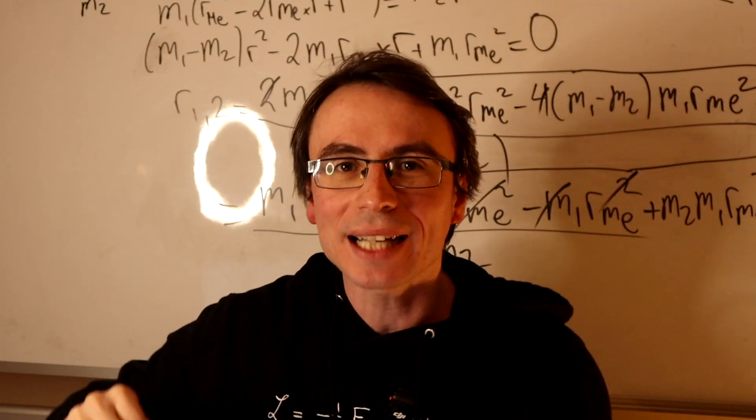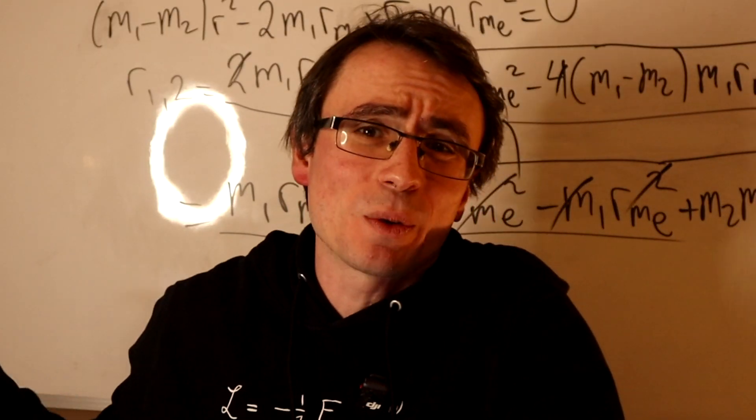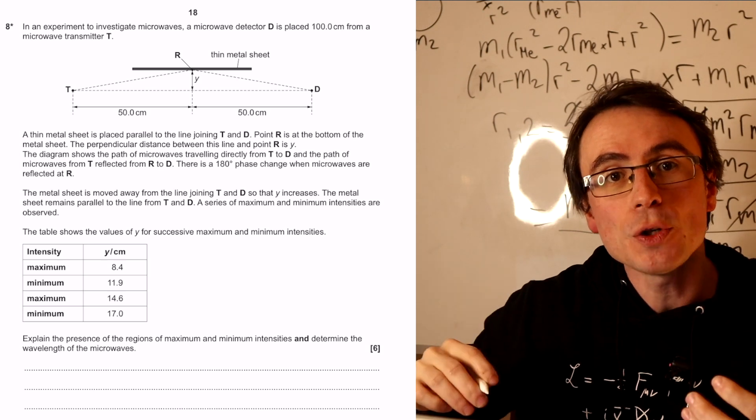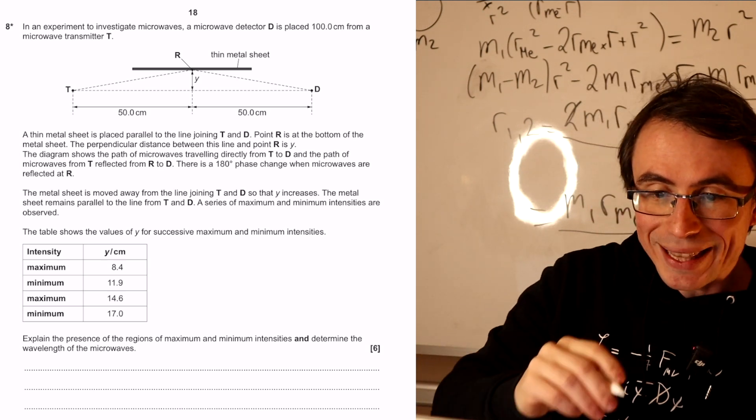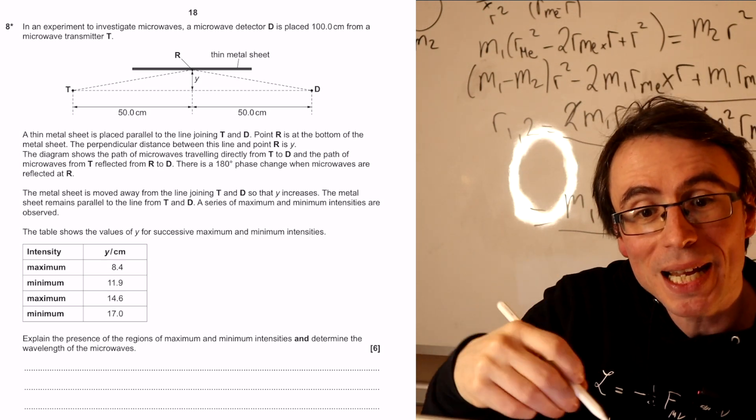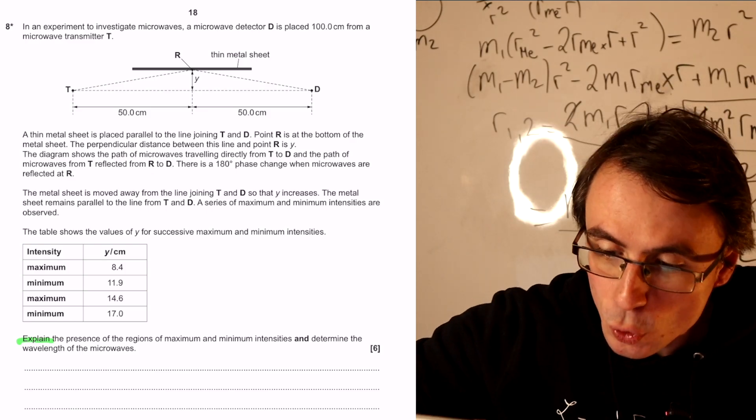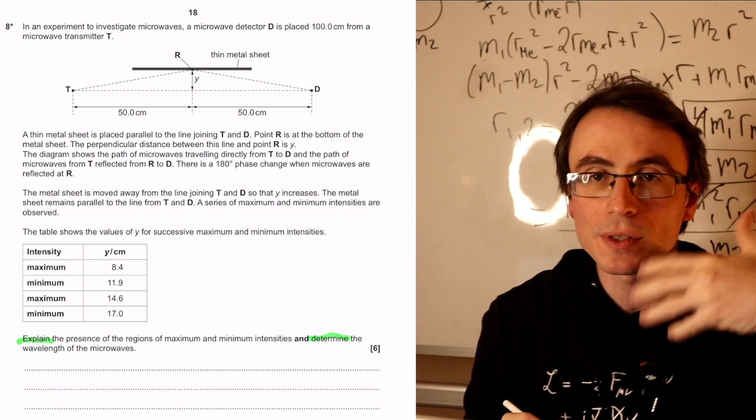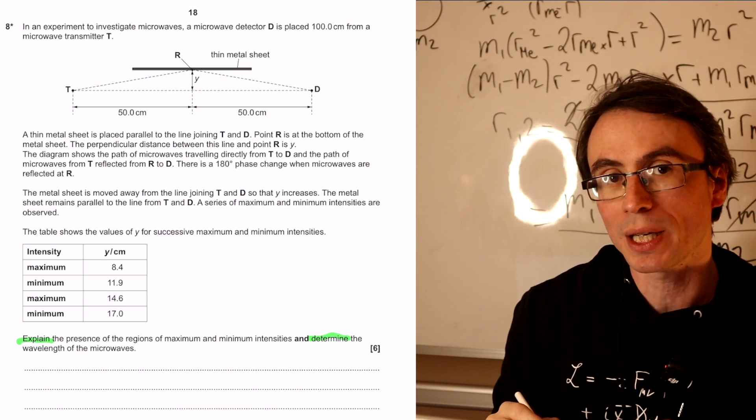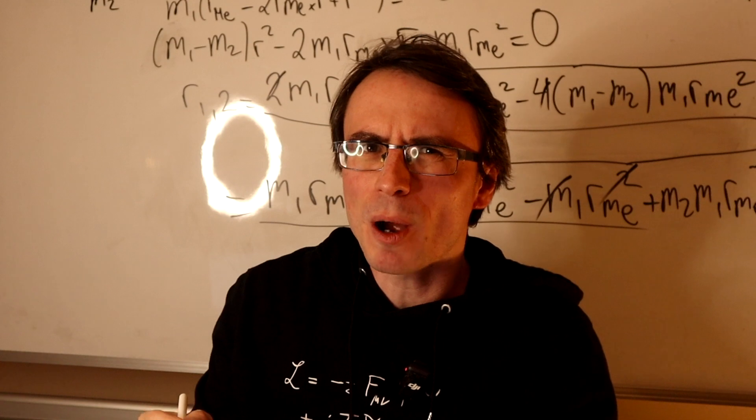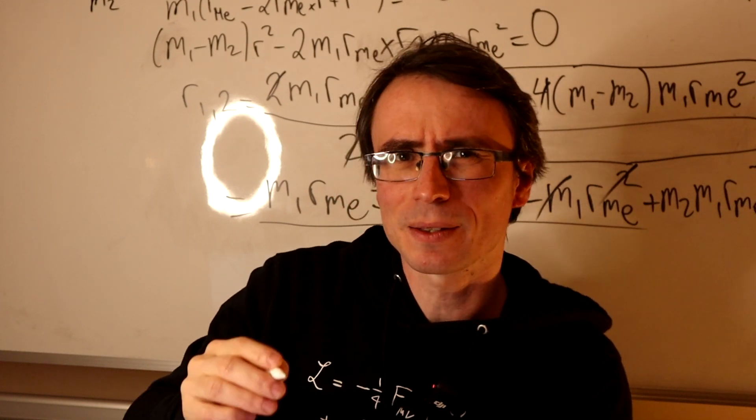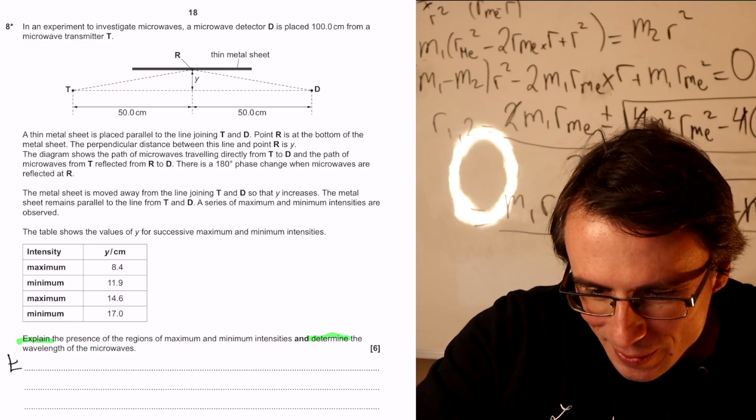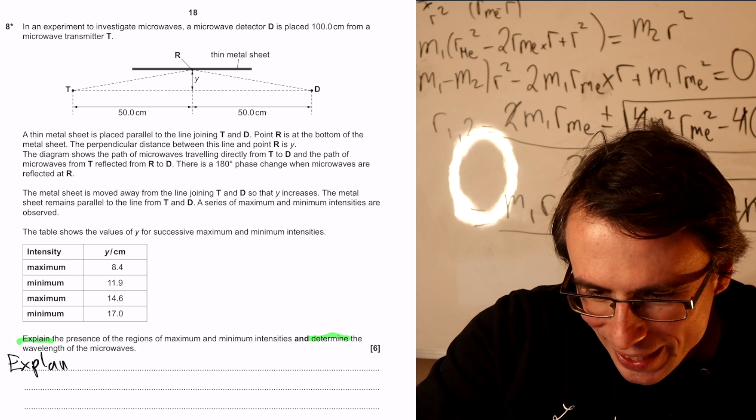A vital tactic with six markers and other questions actually would be to make note of the command words. So in this case, what we have to do is explain and also we're going to need to determine the wavelength of the actual microwaves. This would involve actually doing a calculation. And to help me structure the six marker, I'm actually going to write some headings. So first little bit is simply the explanation.